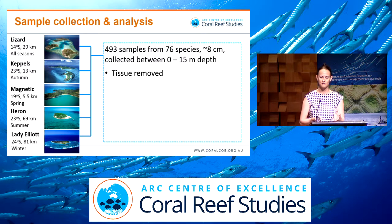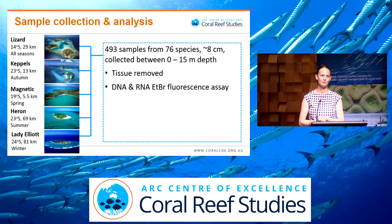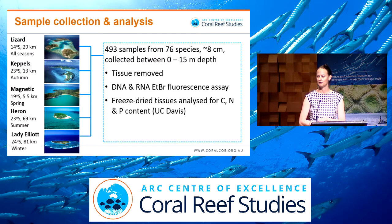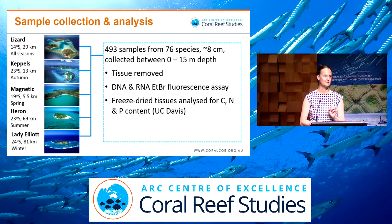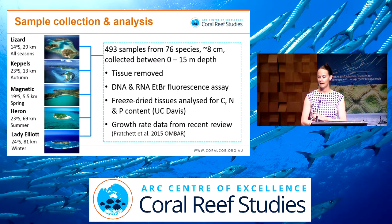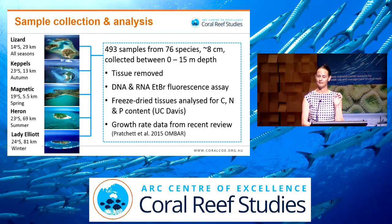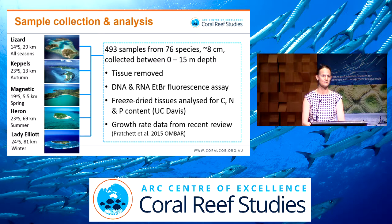Samples were brought back to the lab, tissue was removed, and RNA and DNA were quantified using an ethidium bromide fluorescence assay. Freeze-dried tissues were then sent off for analysis for carbon, nitrogen, and phosphorus content at the UC Davis Stable Isotope Lab. We also analysed nitrogen and carbon stable isotopes for those tissues, but I won't be presenting those data today. To assess the growth rate hypothesis, we compared these RNA to DNA ratios with coral growth data published in a recent review paper led by Morgan Pratchett and Kristen Anderson from the Centre.